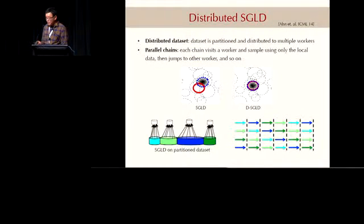Later on, Sungjin also generalized his idea to a very large dataset to make it more distributed. The idea is that when you have a very large dataset, you're basically dividing your dataset into different shards. Each worker node is going to hold a particular shard of your data and generate samples locally.